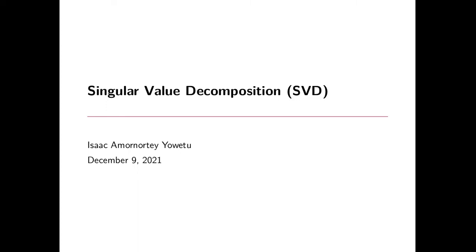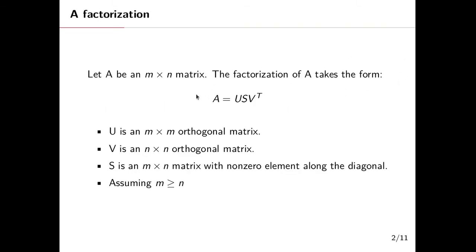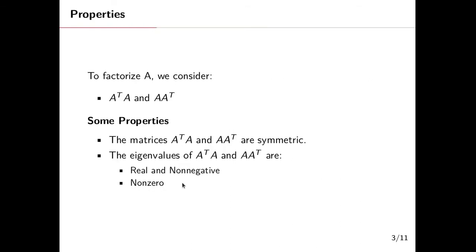Hello fellow learners, welcome to another clip on Singular Value Decomposition, also known as SVD. My name is Isaac. When we have a matrix A of size n by m, we can factorize it into U, S, and V-transpose, where U is an n by m orthogonal matrix, V is an n by n orthogonal matrix, and S takes the same size as the original matrix A — that's n by m — with non-zero elements along the diagonals. This works with the assumption that m is greater than or equal to n.